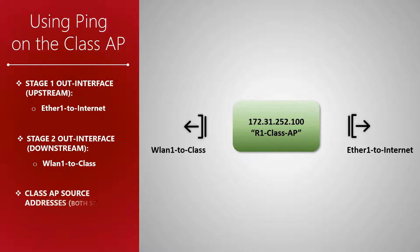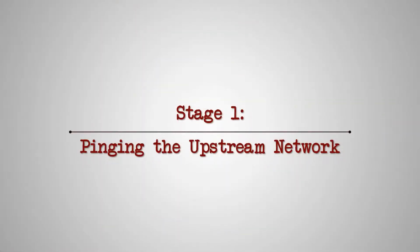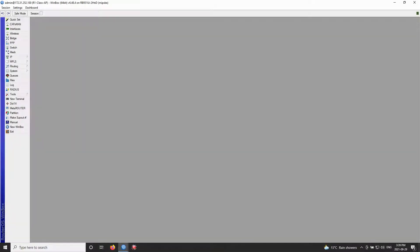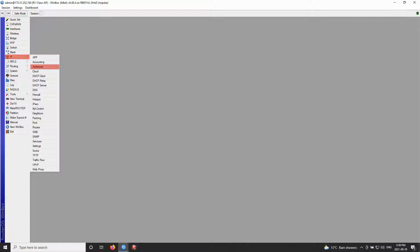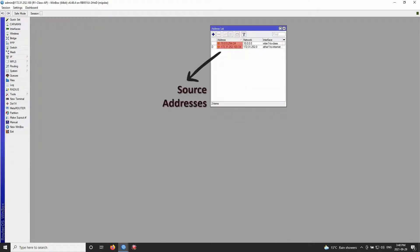Anytime we send a ping packet, the packets using ICMP will exit either of the two out interfaces. We'll be checking the connectivity of both out interfaces for their respective networks. We had set two source addresses on our class AP: 172.31.252.100 and 10.0.0.254. For each of the destination addresses in both upstream and downstream networks, we'll be setting these two source addresses to check their connectivity. Let's open our addresses on the class AP — these two addresses are our source addresses and these two interfaces are the out interfaces.